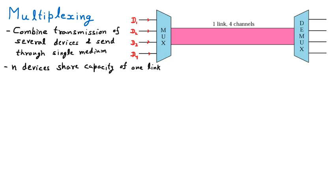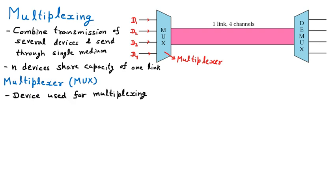In the diagram there is MUX, which stands for multiplexer. The MUX is the multiplexer which is going to multiplex all the signals. The multiplexer is the device used for multiplexing. Four devices pass their data through the multiplexer into a single channel. Many data are combined into one form, so the multiplexer or MUX is many-to-one.